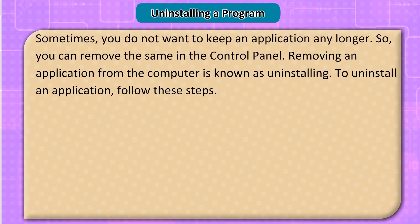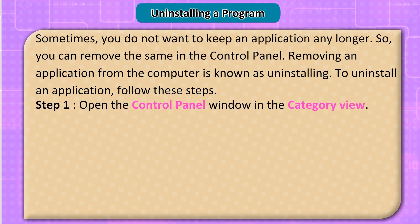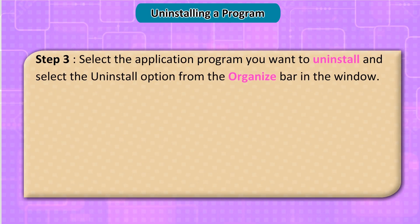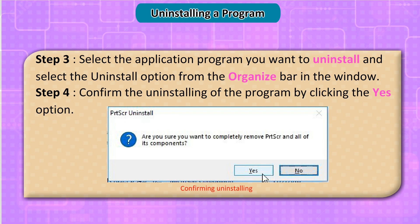Sometimes you do not want to keep an application any longer, so you can remove it using the Control Panel. Removing an application is known as uninstalling. To uninstall an application: Step 1: Open the Control Panel window in Category View. Step 2: Select the Uninstall a Program option under the Programs category. The Programs and Features window appears. Step 3: Select the application you want to uninstall and select the Uninstall option from the Organize bar. Step 4: Confirm the uninstalling by clicking Yes.